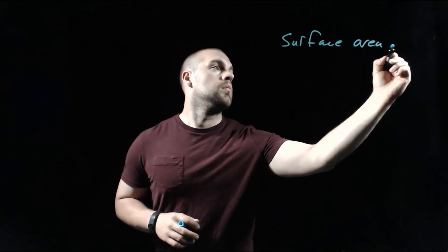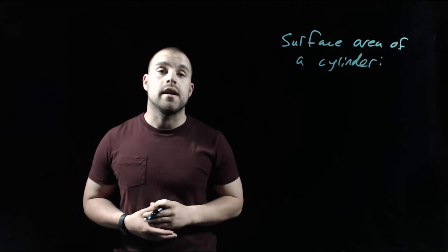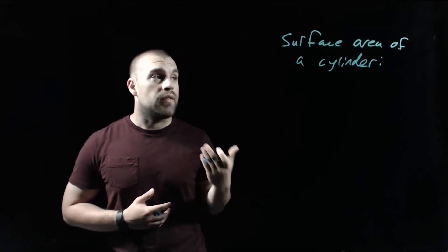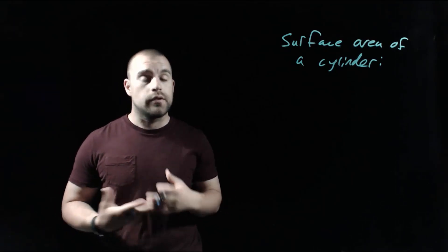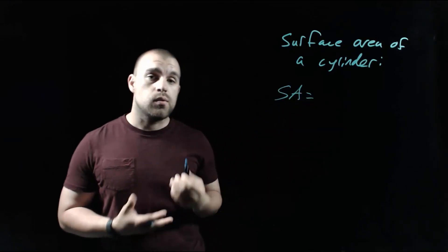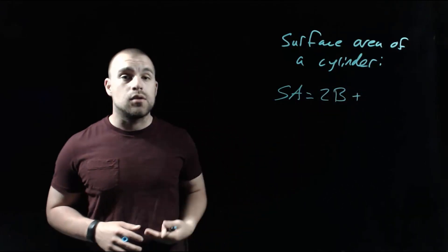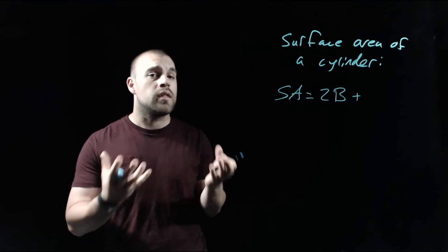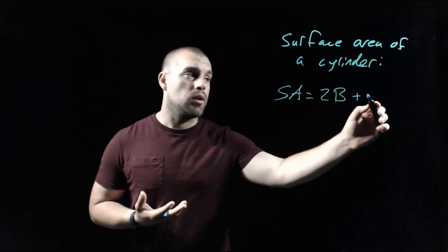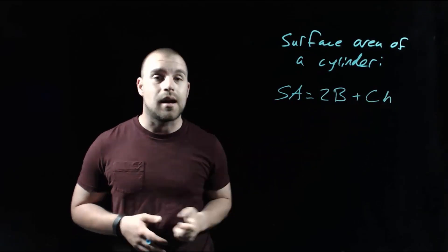The next thing we're going to look at is finding the surface area of a cylinder. A cylinder is very similar to a prism — the only difference is instead of having a polygon as the bases, we've got circles. So the surface area formula is going to be very similar as well. We're still going to take 2 times the area of the base and add something to it. But instead of using the perimeter, for circles the distance around the outside is called the circumference. So we use the circumference times the height: 2 times the area of the base, plus the circumference of our circle times the height.